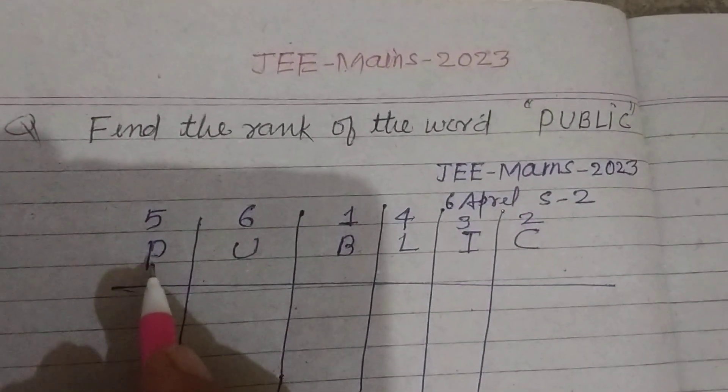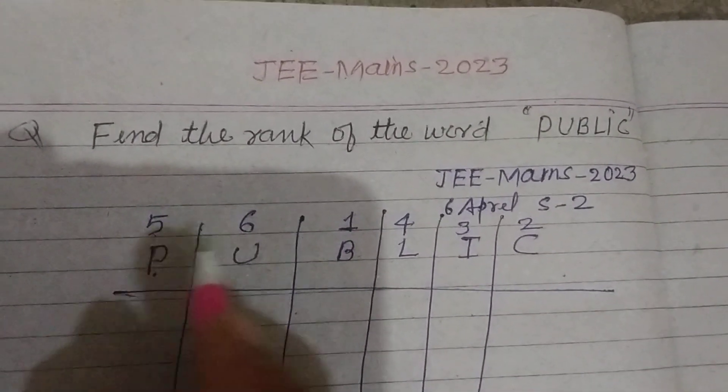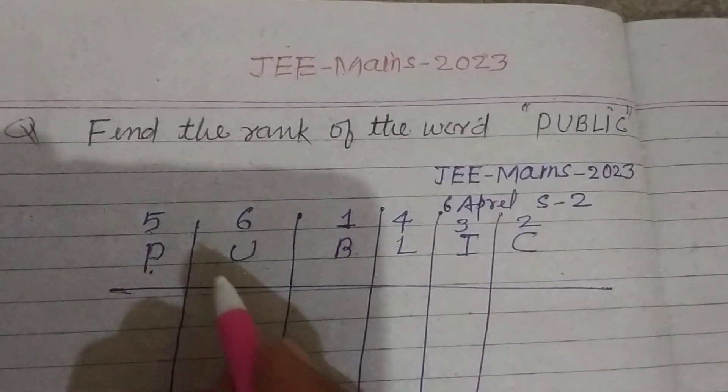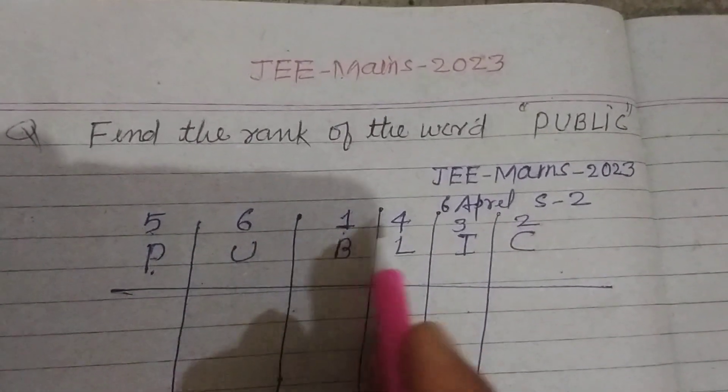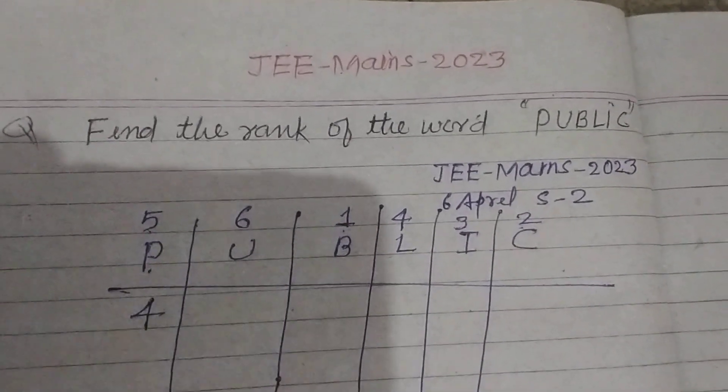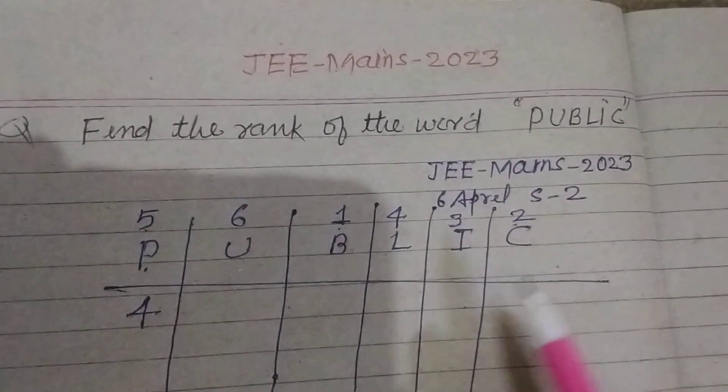Now P, which has fifth number, how many letters on the right side are less than five? So one, two, three, four. Four letters have number before five in right side.